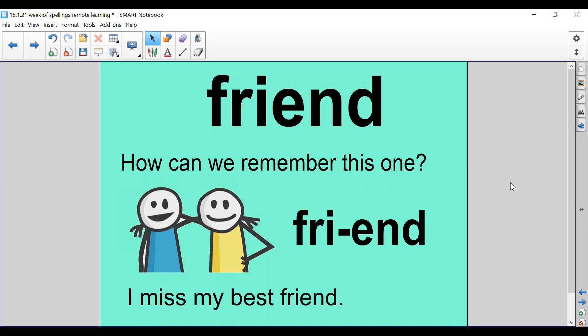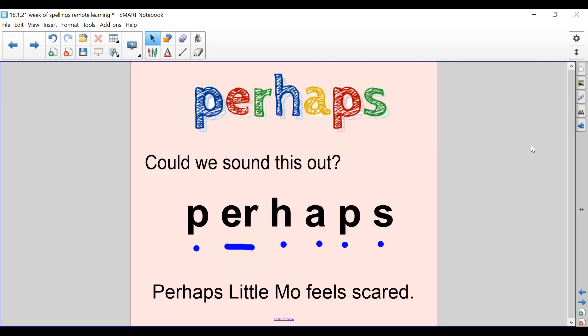The year 1 and 2 words we're going to look at for today is FRIEND. How can we remember this one? Well I know and I'm sure some of you have heard this one before that if I say FRIEND like FRIEND it helps me to remember the spelling. I miss my best friend. The year 3-4 word that we're going to look at today is PERHAPS. Could we sound this one out? P-U-H-A-P-S. PERHAPS. Perhaps little Mo feels scared.